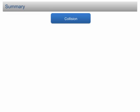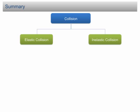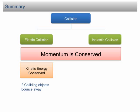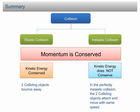Summary. There are two types of collision: the elastic collision and the inelastic collision. In both collisions, the momentum is conserved. For elastic collision, the kinetic energy is conserved and colliding objects bounce away after the collision. For inelastic collision, the kinetic energy is not conserved. In a perfectly inelastic collision, the two colliding objects attach and move with the same speed after the collision.